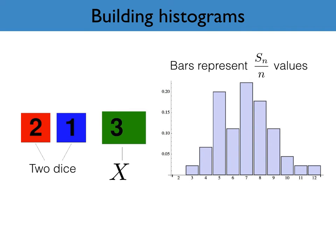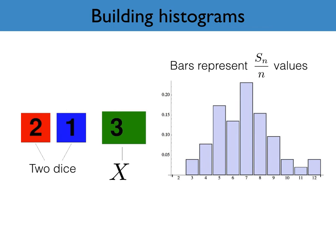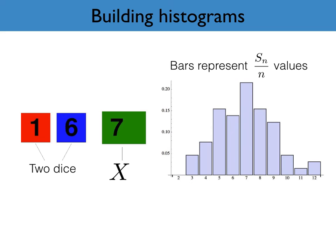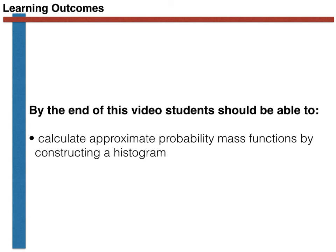This process of generating a histogram based on the outcome of multiple experiments is hopefully something you have seen before. What this video hopefully makes clear is that the reason this histogram converges onto a single function is connected to the law of large numbers. To finish, the purpose of this video was to show you how we can calculate approximate probability mass functions by calculating histograms. Hopefully you now understand how this is done and are ready to move on to the programming exercise that will allow you to consolidate what you have learnt. Thank you for your attention.